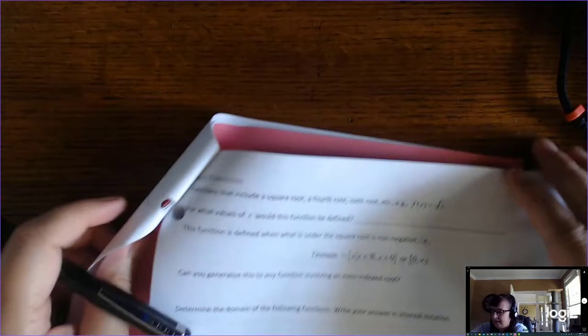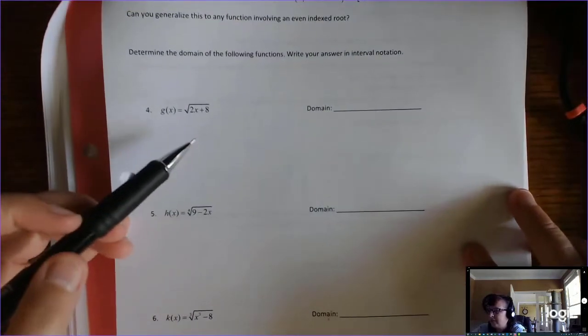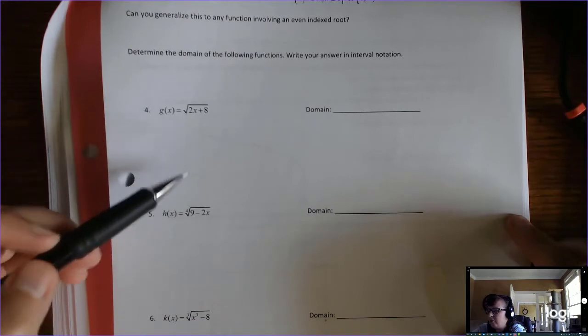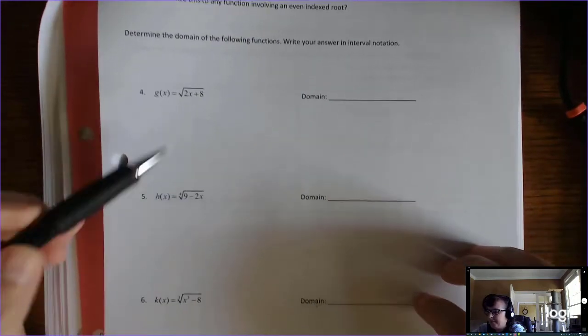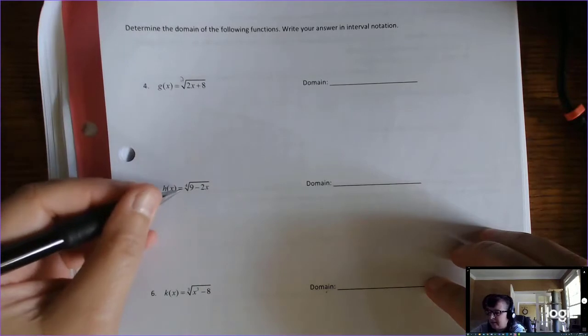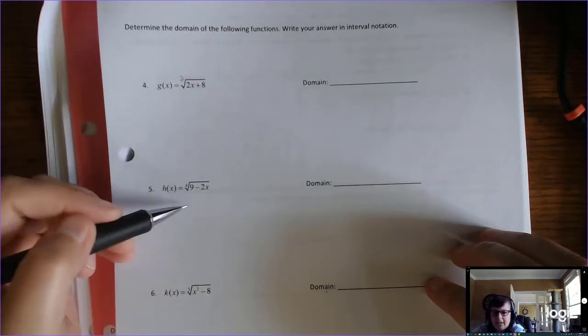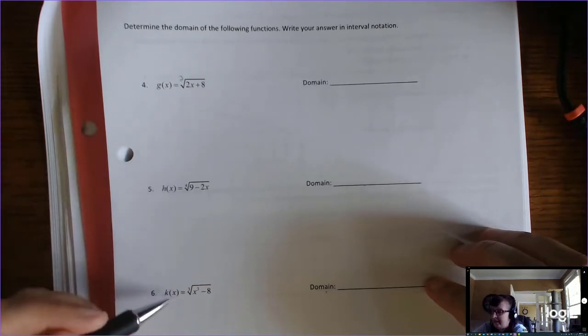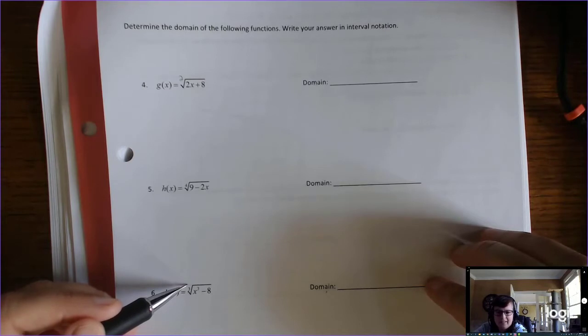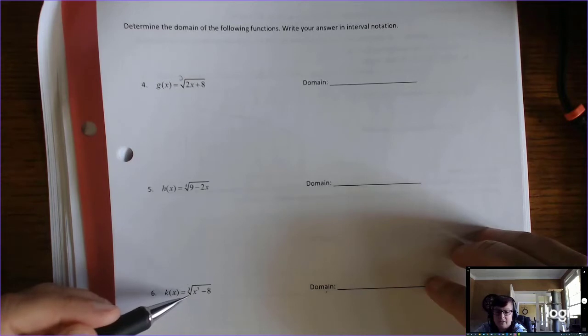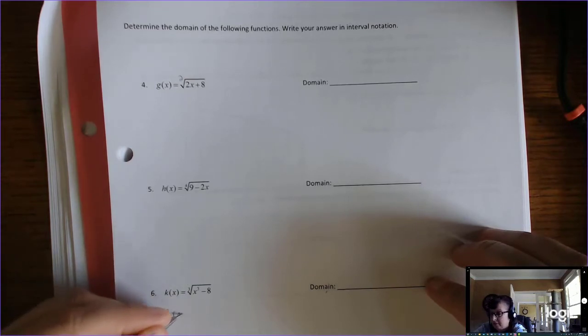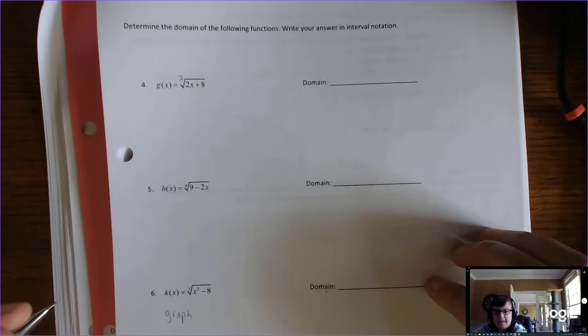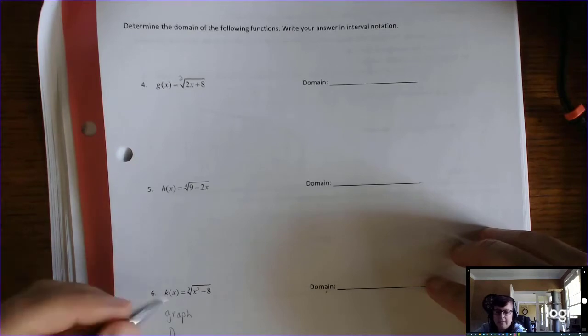All right, and then this page is some practice with finding the domain, and notice that these are all radical functions. This has an index of 2. This has an index of 4, so these are even indexed radicals. Look back at your notes. What is the rule for even indexed radicals? And then this one is an odd indexed radical. So what is the rule for odd indexed radicals? Are there any? Look at the graph of that to see what the domain is graphically, and then go, aha, I know what the domain is.